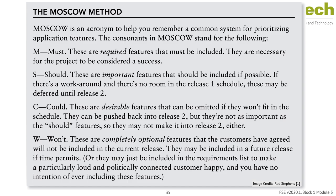MoSCoW is a model for requirements prioritization that divides requirements into four categories. M stands for Must — required features that must be included, typically necessary for the project to be considered a success. S stands for Should — important features that should be included if possible. C indicates desirable features that can be omitted if they won't fit in the schedule or can be pushed to release 2. W designates completely optional features that the customer has agreed will not be included in the current release.